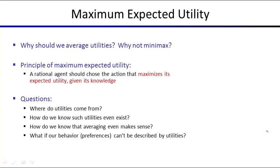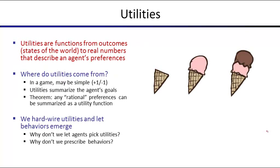Now today we'll know what maximum expected utility means. We know what it is to maximize expected utilities — we just don't yet know where these utilities come from. How do we know they even exist? How can you put a number on a cat and a dog, and then average those? And what behavior is prescribed by these utilities? Utilities are functions from outcomes — which could be game outcomes, or outcomes in the world — that describe an agent's preferences. The higher the number, the more preferred.